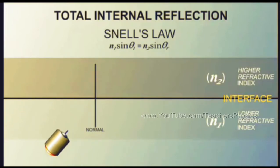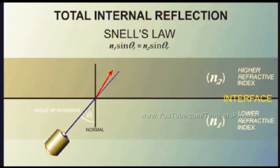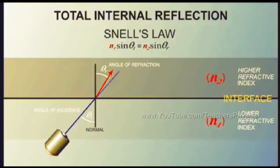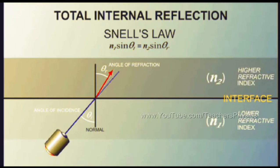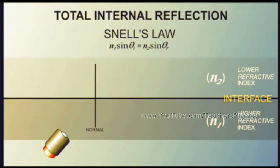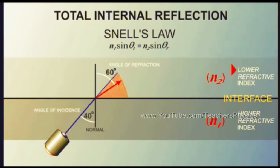When light hits the interface at an angle, the change in light speed causes the beam to change direction and propagate through the second medium at a different angle. The angle at which light hits the interface is the angle of incidence; the angle at which it propagates through the new medium is the angle of refraction. By placing known values into Snell's formula, the degree of refraction can be determined. Snell's law states that if the refractive index of the second medium is greater than the first, the angle of refraction is smaller than the angle of incidence, and conversely, if the refractive index of the second medium is smaller, the angle of refraction is greater.